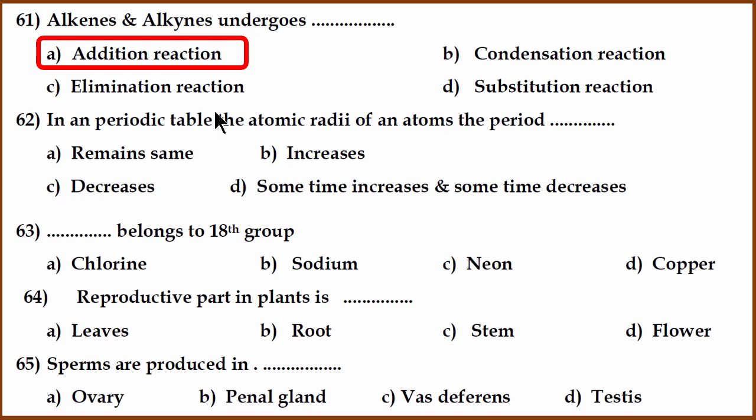Next, periodic table. Atomic radii of the atoms. Again, poorly written question. What they're asking is, what happens across the period? Across the period, atomic radii decreases. Now usually, across the period, electrons increase. But because the number of nuclear density increases, the atom radii actually shrinks. So it is decreases. If you go down the group, it increases.